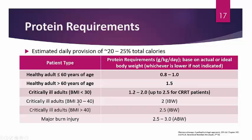Depending on BMI, patients with a BMI of 30 to 40 will require 2 grams per kilo per day ideal body weight, and patients with a BMI greater than 40 will get 2.5 grams per kilo per day ideal body weight. For patients with major burn injuries, 2.5 to 3 grams of actual body weight per day will be needed to promote wound healing. These last three categories are not bolded, so they're not required to be memorized for exams, but may come up in examples.